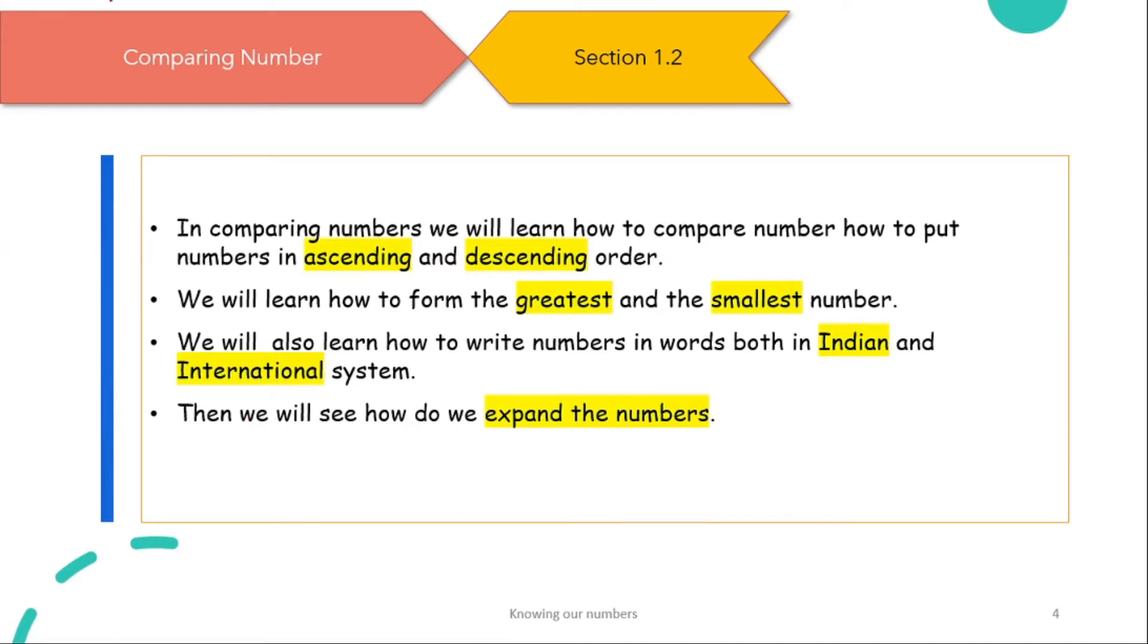In comparing numbers, we will learn how to compare and put the numbers in ascending and descending order. I am sure many of you know what is ascending and descending order, but if you don't, ascending order means from the smallest to the largest and descending order means from putting the largest to the smallest. We will learn how to form the greatest and the smallest number. We will also learn how to write numbers in words both in Indian and international system. Then we will see how to expand the numbers.